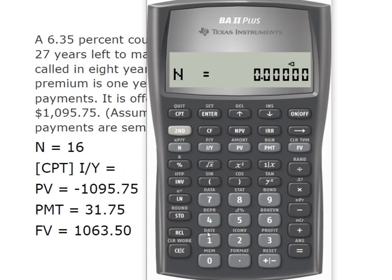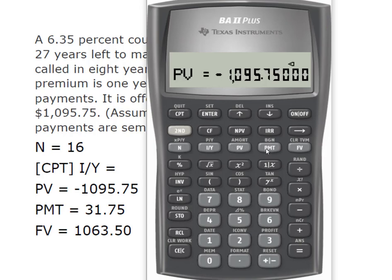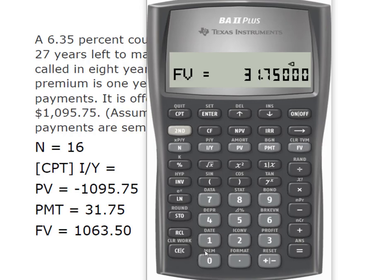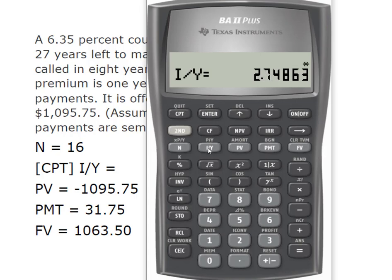So: N equals 16; present value is -$1,095.75; payment is $31.75; and our future value includes that one-year call premium, so it's $1,063.50. We compute I/Y and multiply by 2 to express it as an annual rate, which gives us a yield to call of 5.50%, rounded to two decimal places.